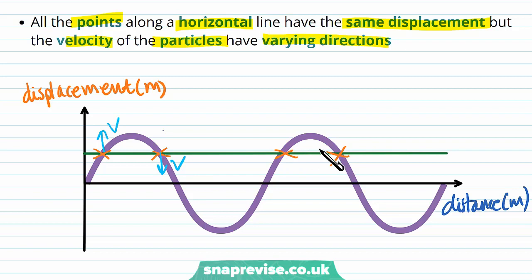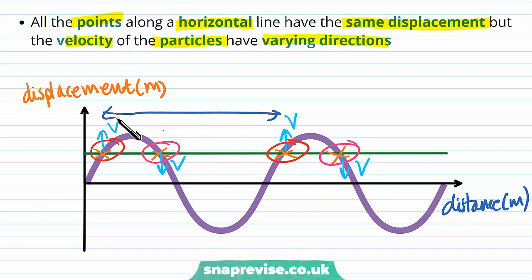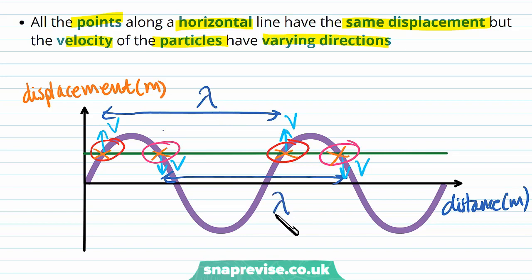If we look at two points where one is moving upward and another downward, those velocities differ. For wavelength, we need two points with the same displacement and same velocity. So we identify the correct pair of adjacent points, measure the distance between them, and that gives us the wavelength lambda — represented by the Greek letter lambda, this symbol here.